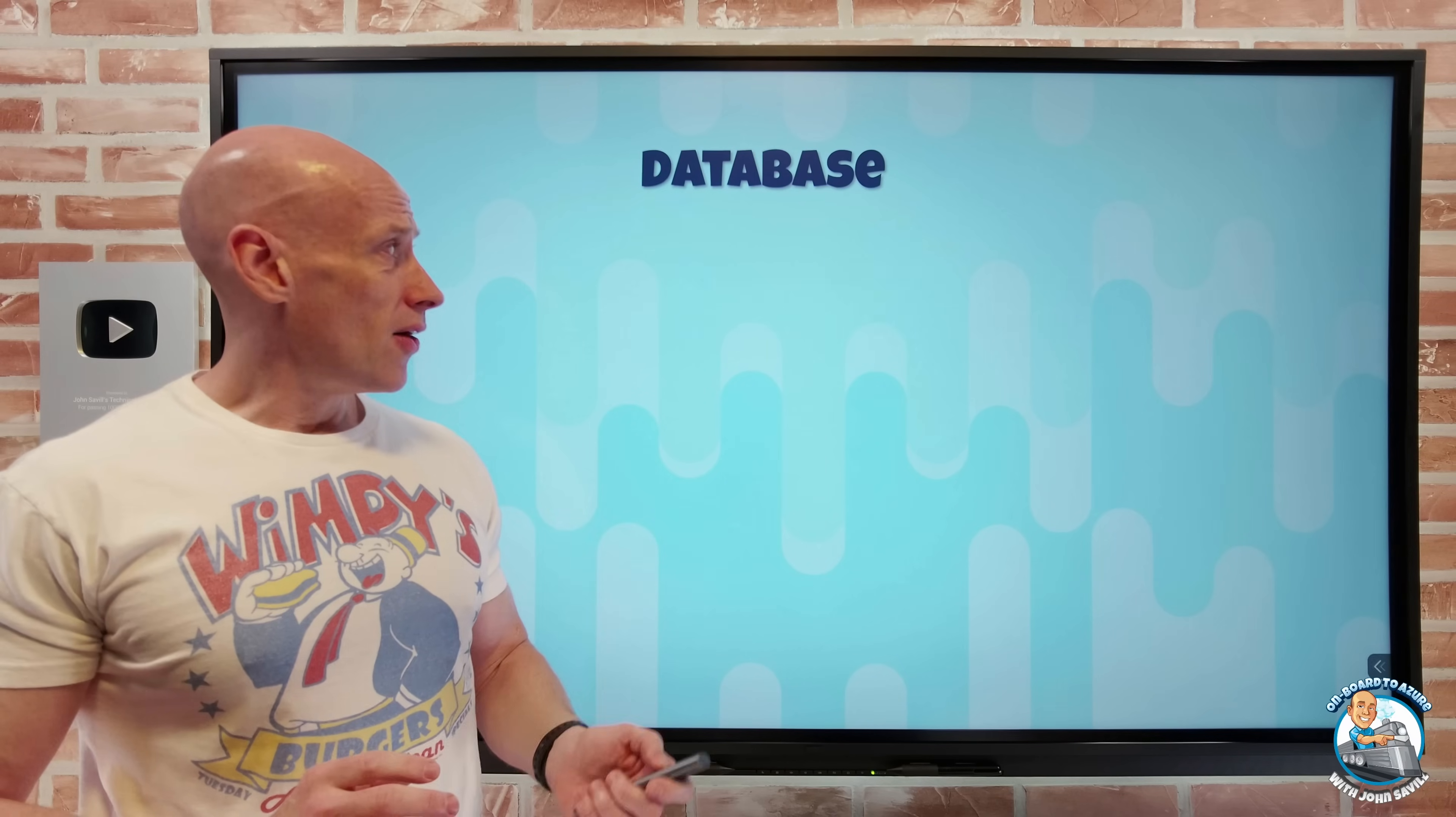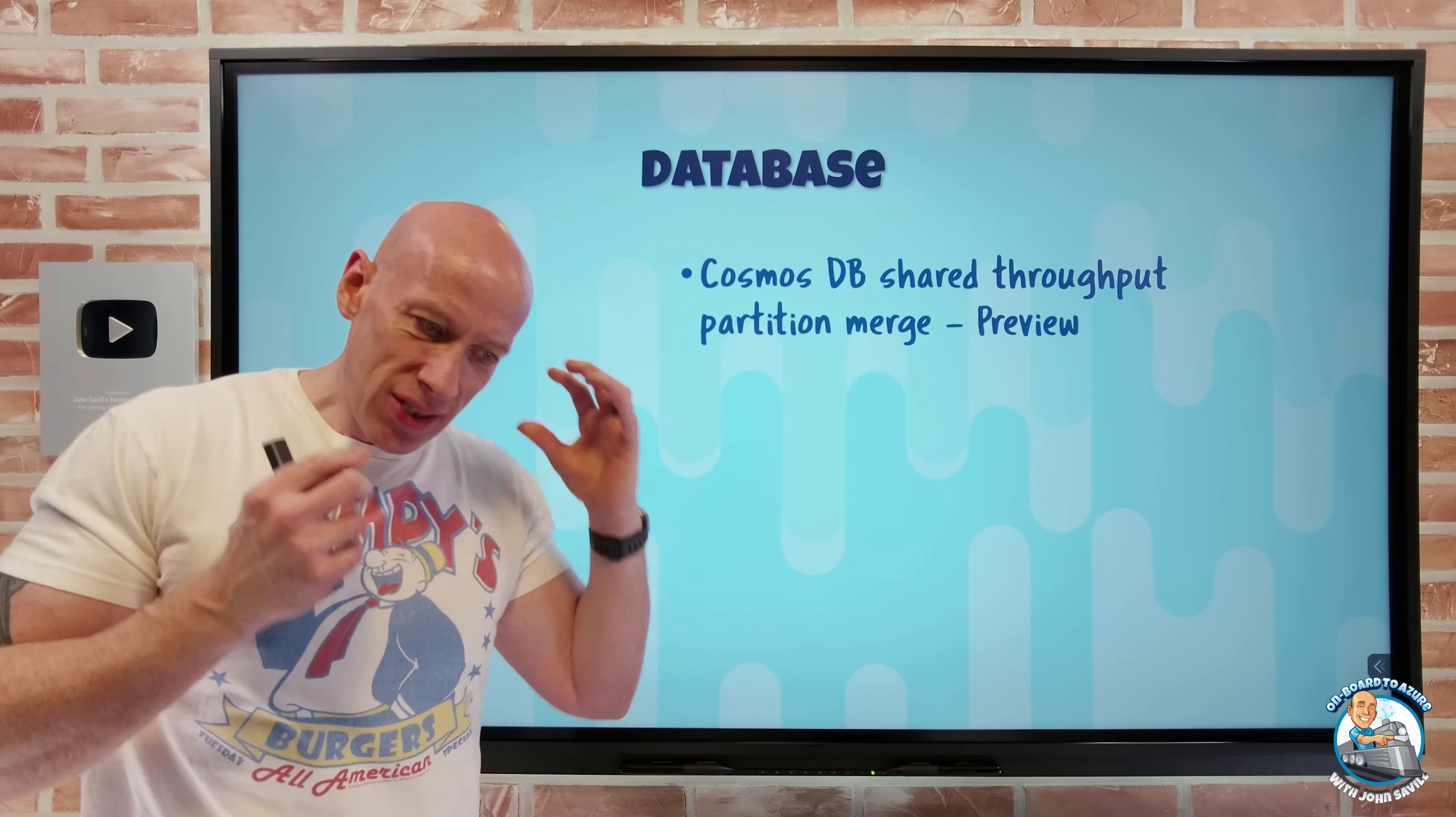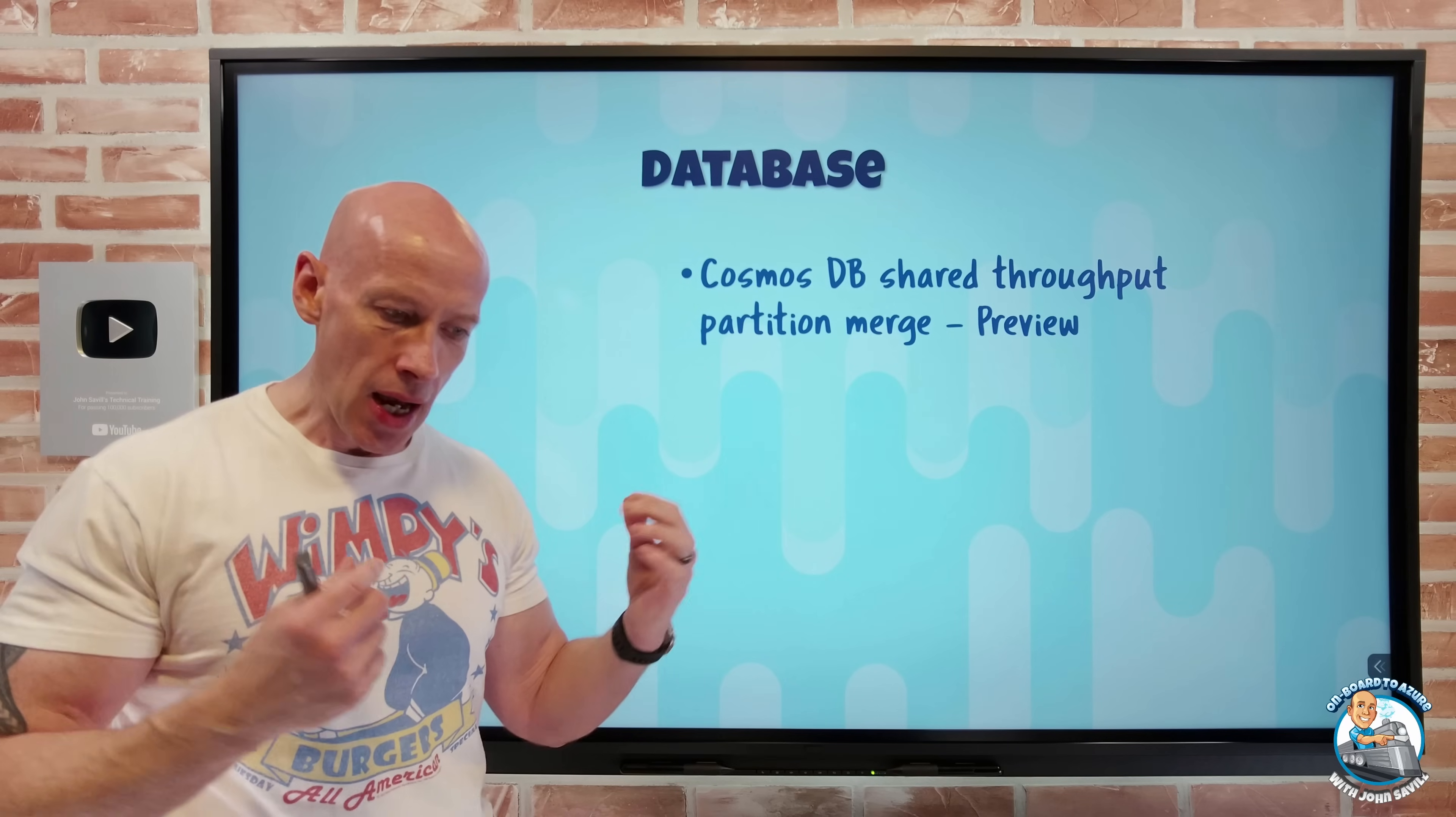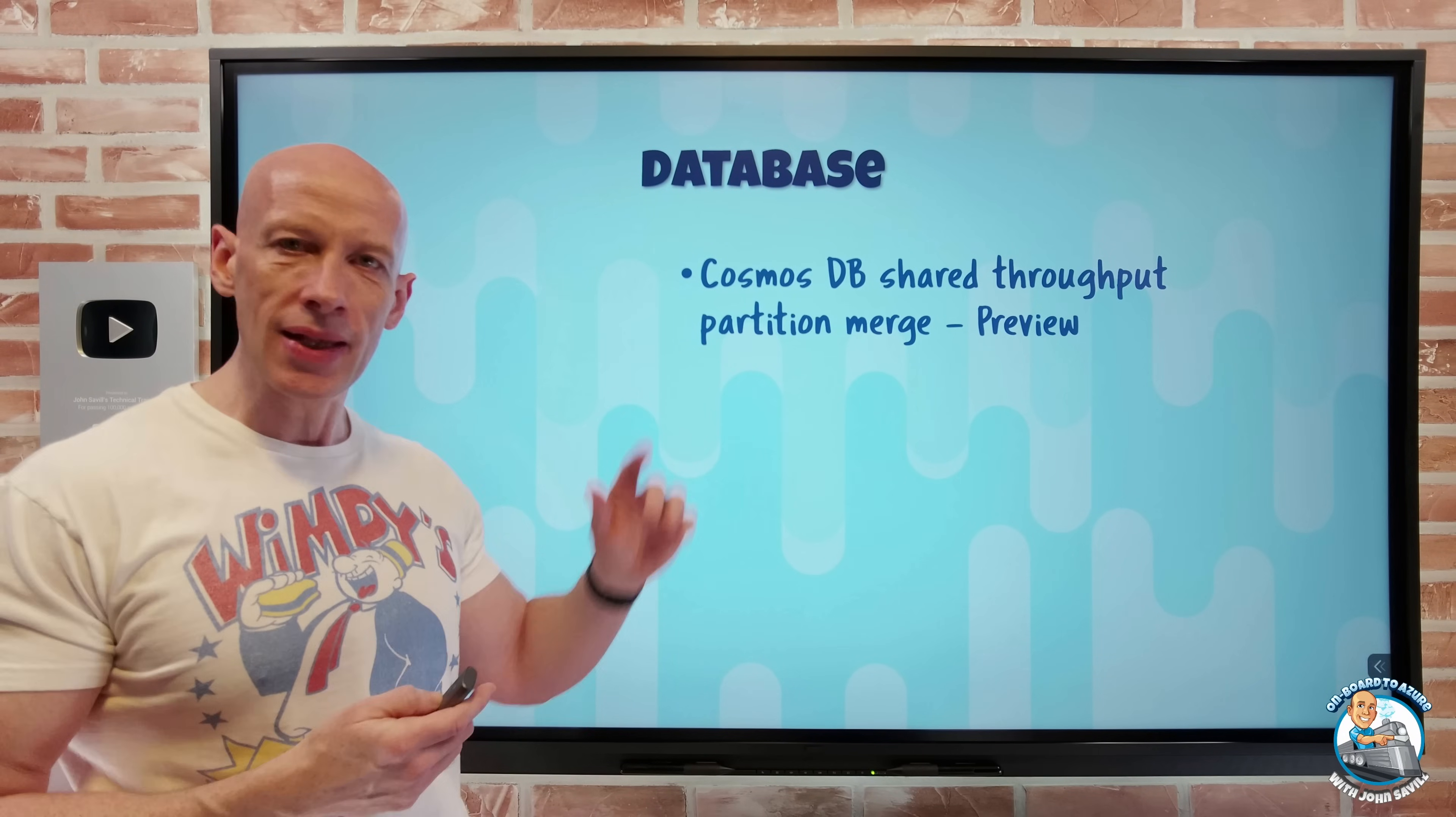And then on the database side, Cosmos DB now has, when I'm using shared throughput models, I can do a partition merge. So if I have partitions that I've fragmented throughput, maybe it's less than 3,000 request units per partition, less than 20 gigabytes of storage per partition. I can clear out and remove those unused empty partitions and get rid of that fragmentation. I can merge them in together and get better utilization. That's in preview.